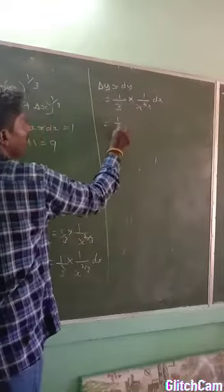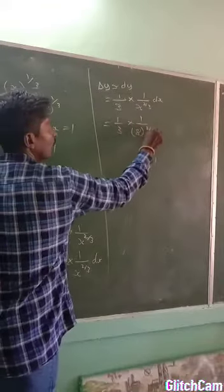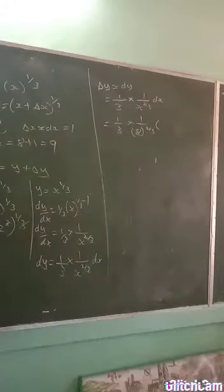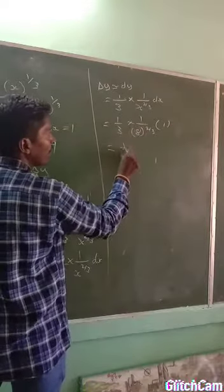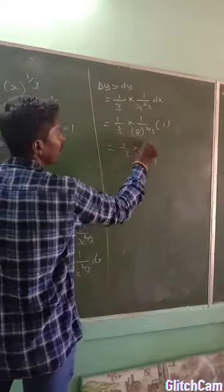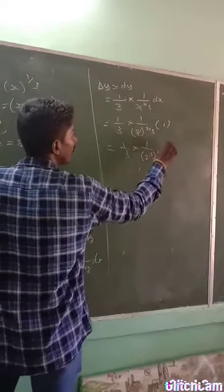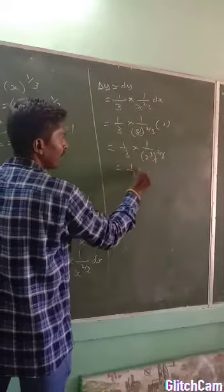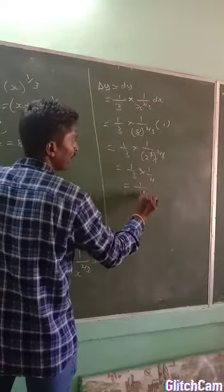Now we substitute the values: x = 8 and dx = 1. We have 8 = 2^3, so 8^(2/3) = (2^3)^(2/3) = 2^2 = 4. The 3s cancel, leaving us with δy ≈ dy = (1/3) · (1/4) · 1 = 1/12.